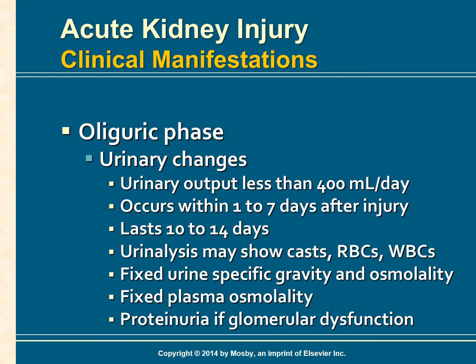Oliguria is a reduction in urine output to less than 400 mL per day. Oliguria usually occurs within one to seven days of the injury to the kidneys. If the cause is ischemia, oliguria will often occur within 24 hours.